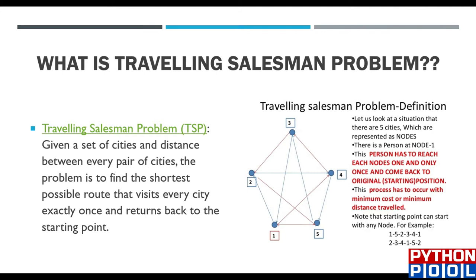This type of algorithm is mainly used in navigation systems like Google Maps. The Traveling Salesman Problem is: given a set of cities and the distance between each pair, find the shortest possible route that visits every city exactly once and returns to the starting point. I need to find the shortest path visiting points two, three, four, and five and returning to one, calculating the minimum weight.